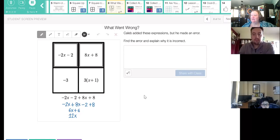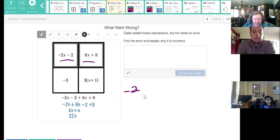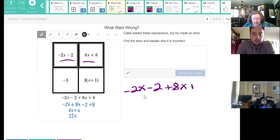I've opened this up so you can get to slide eight. Caleb added these expressions, but he made an error. Find the error and explain why it's incorrect. Well, I don't know about you, but I have a hard time looking at other people's work without doing the work myself first. And that's true of me now after teaching math for so many years. I still need to do the work myself, and then I look at what they did and see what the mistake might have been. So I see here that Caleb has chosen these top two boxes. So I'm going to put down negative two X minus two plus eight X plus eight. And then the first thing I do is I go and look and see if he wrote the same thing I did.